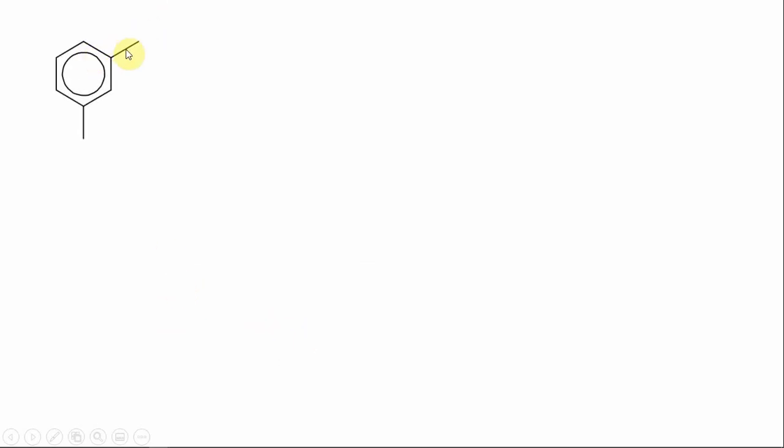If we double up the methyl groups, we look at the orientation here. In this case, we would pick one and then go in the direction closest to the other one and number them one, two, three. So this would be one-three-dimethyl benzene.